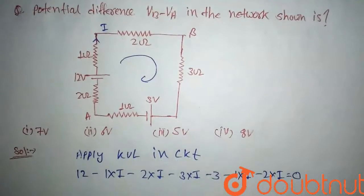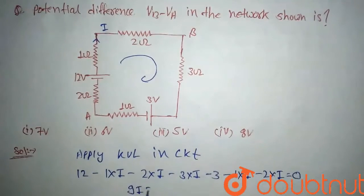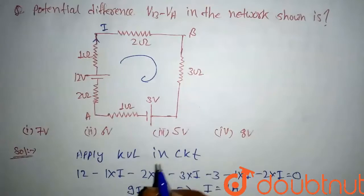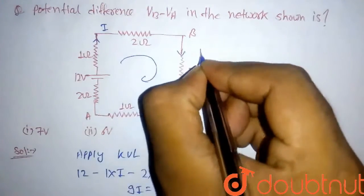So after solving it we will get 9I equal to 9, so our current comes out here I equal to 1 ampere. So the current flowing through the circuit is 1 ampere. The current here will be 1 ampere, here also will be 1 ampere.